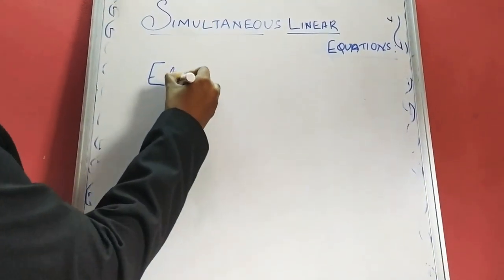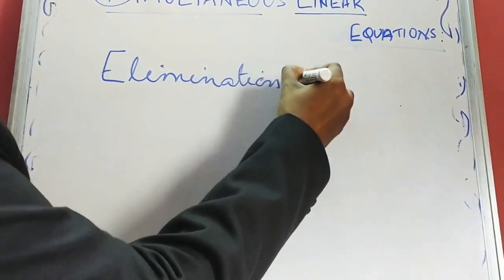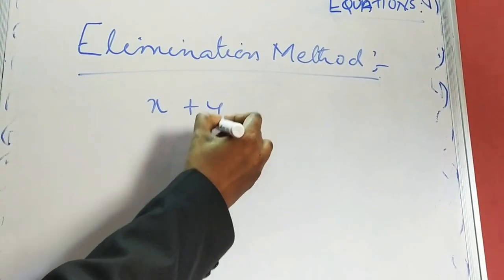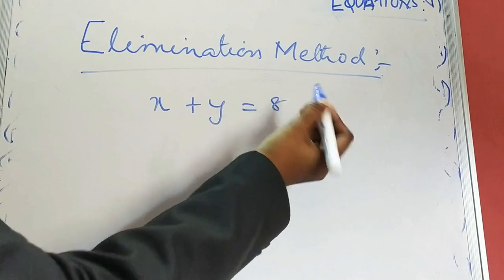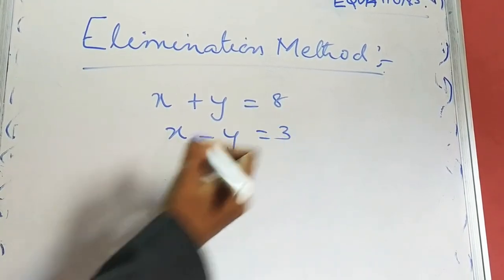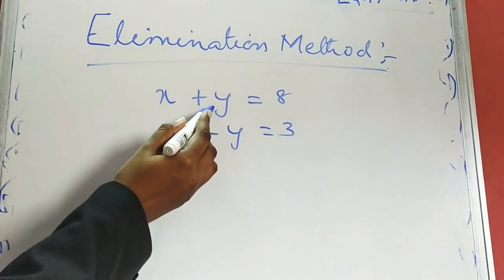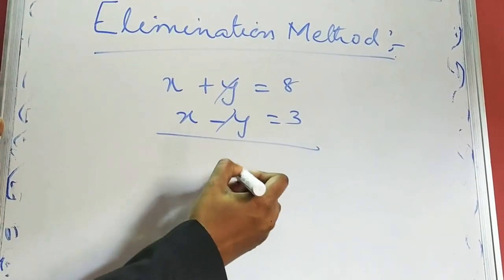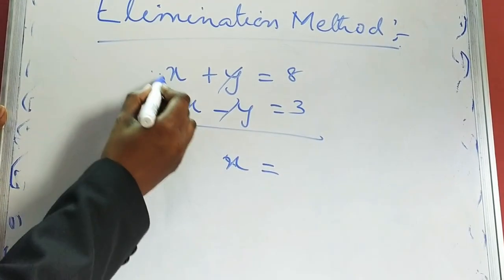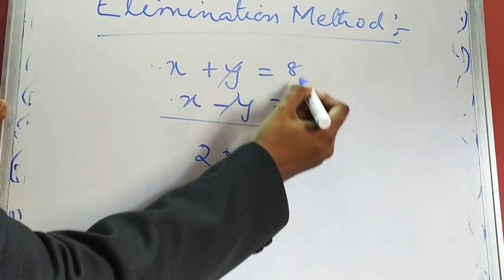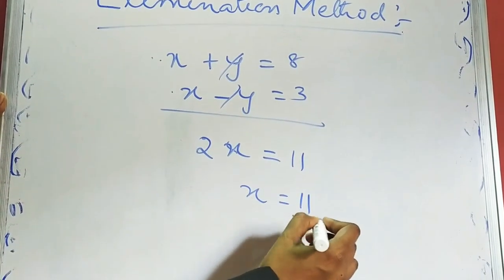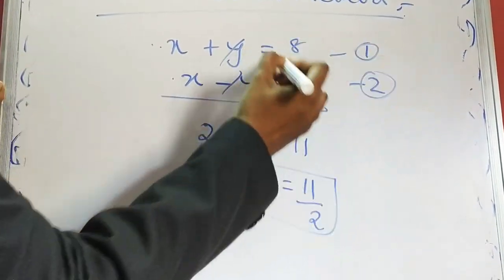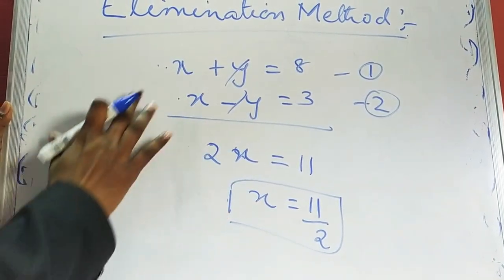So we are going to discuss the elimination method. In this elimination method, when we are having a pair of linear equations — suppose x plus y is equal to 8, and x minus y is equal to 3 — we are eliminating one of the variables. Suppose we eliminate y; when you add x plus x we get 2x, and 8 plus 3 we get 11. Therefore x is equal to 11 by 2. This value we then substitute in any of these two equations. This is the method briefly explained.